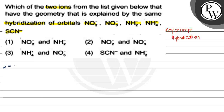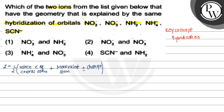Hybridization, denoted by Z, equals half the valence electrons of the central atom, plus monovalent atoms, plus or minus charge — either it is positive or negative.